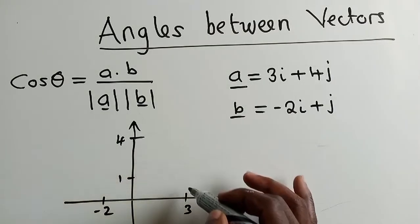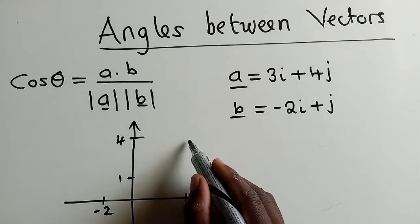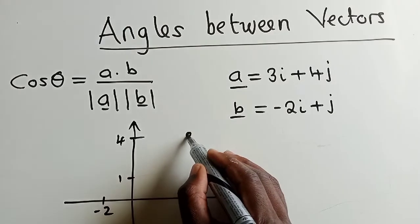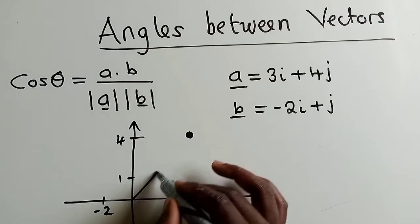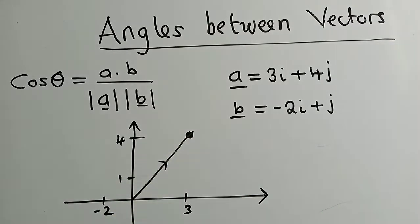So, for this one, vector A, it will be 3, 4, right here. So, this is the vector we are talking about. This is our vector A.